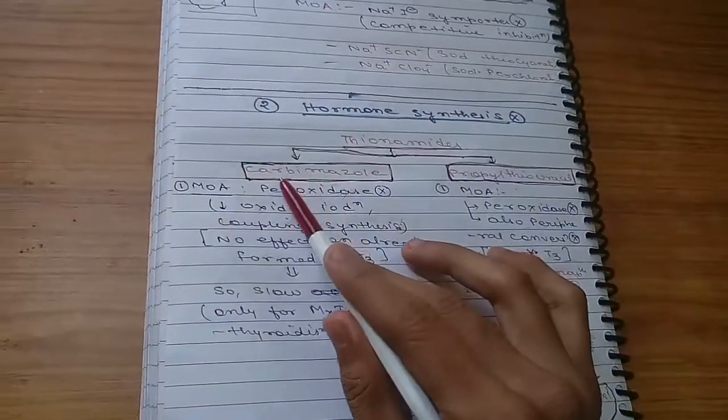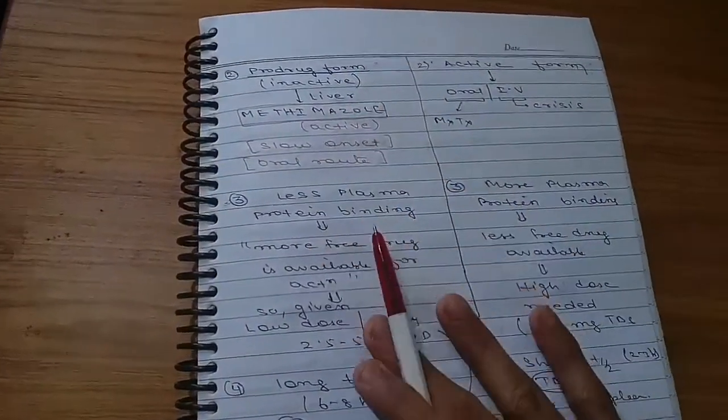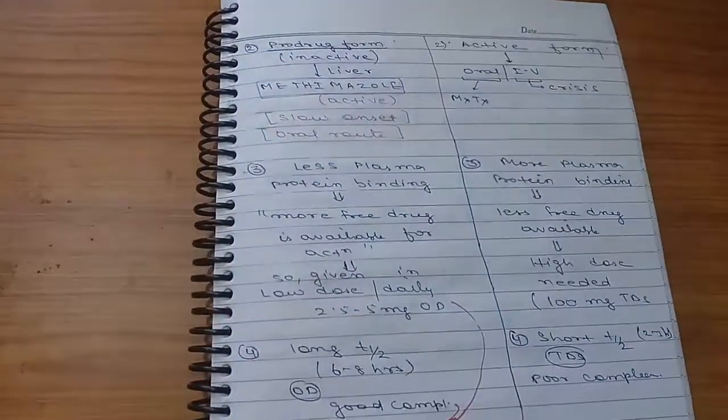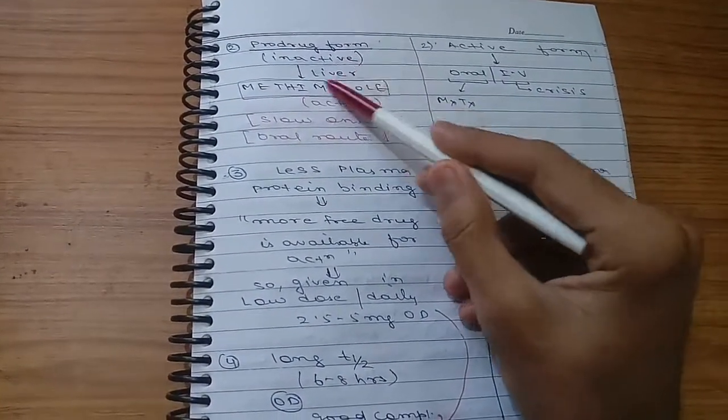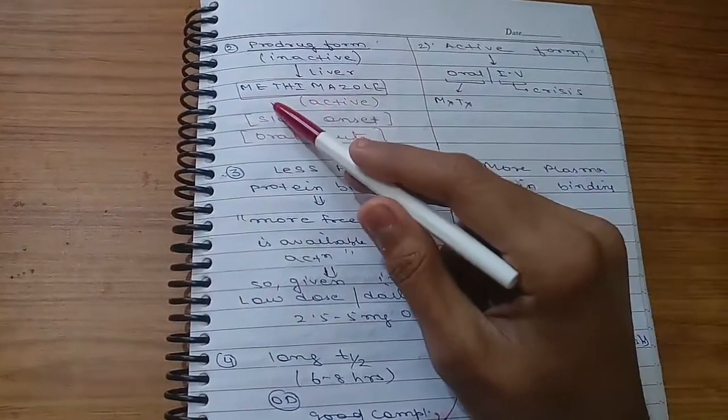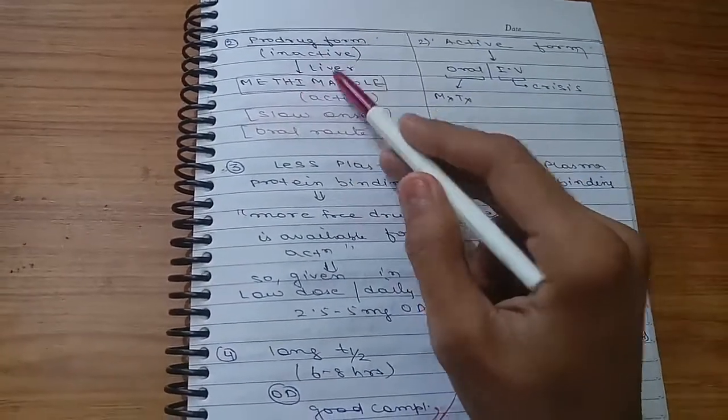Now, some differences between carbimazole and propylthiouracil. Carbimazole is in prodrug form, inactive, and after going to liver it is converted into active form, methimazole. This is one more reason for its slow onset of action.